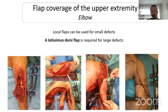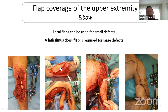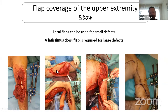For upper extremity reconstruction, there are two locations where you usually need a flap: the elbow and the hand. For the elbow, you can use local flap for small defects, or the pedicle latissimus dorsi flap — a large flap but not complicated to do — to cover a large defect on the anterior or posterior side of the elbow. It is easier to perform only a muscle flap without skin paddle and add skin grafting on top.